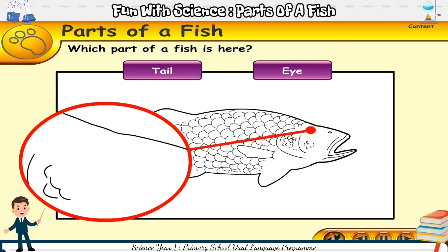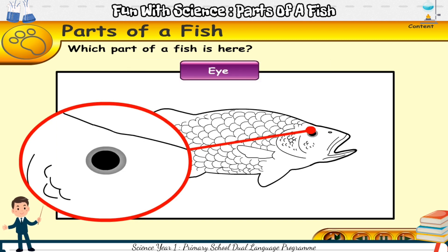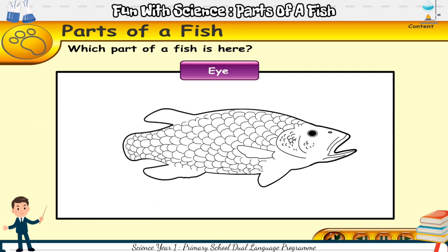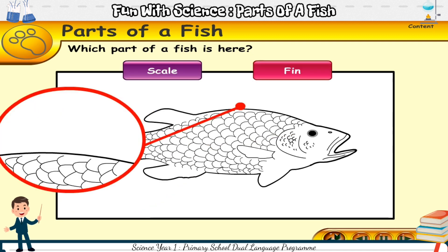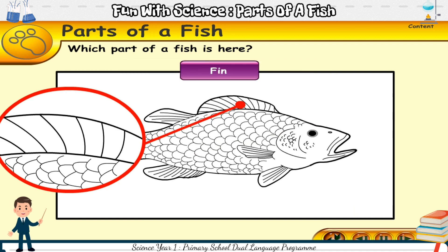Which part of a fish is here? The eye is here. A fish has two eyes. Which part of a fish is here? The fin is here.